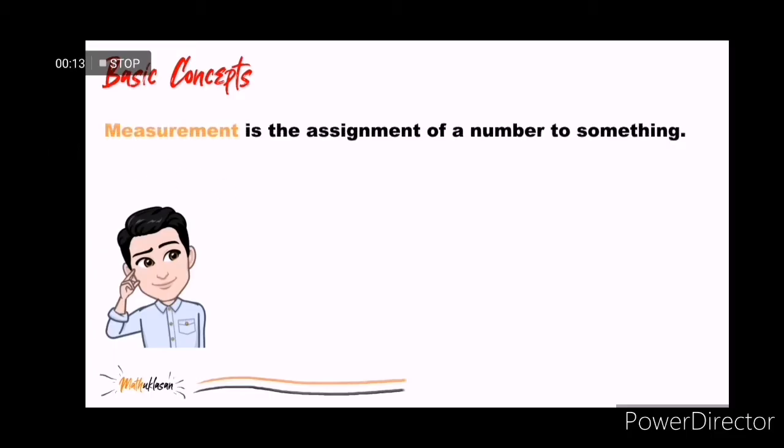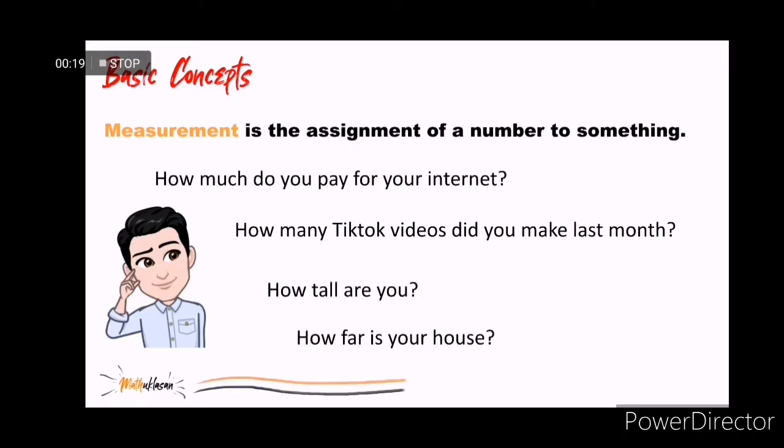The first is measurement. Measurement is the assignment of a number to something. So, if someone will ask about your monthly internet bill, you are using measurement if you are thinking of an amount to describe your bill. Same as with the following questions.